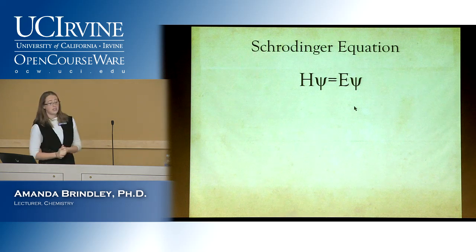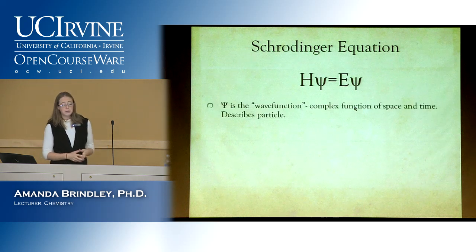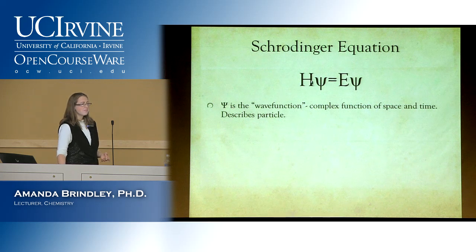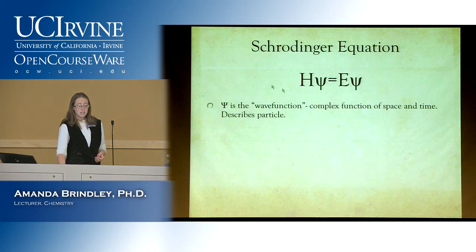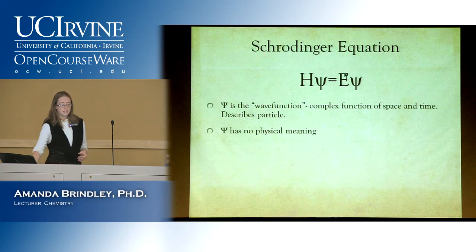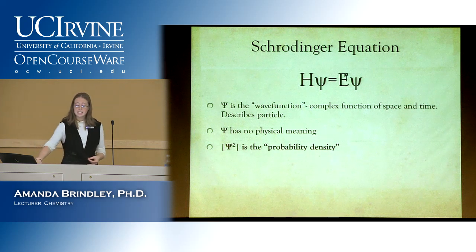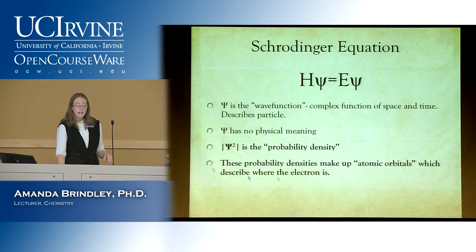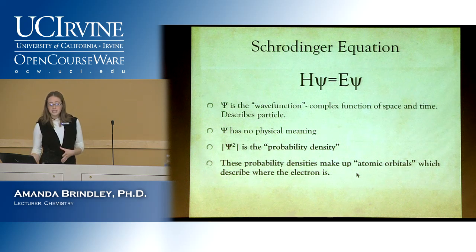Since you were missing our talk on the Schrödinger equation, let's revisit it. H psi equals E psi — psi is our wave function describing the movement of a particle. Psi squared is a probability density describing the likelihood of finding an electron in a certain place. These probability densities make up atomic orbitals, which describe where electrons are.